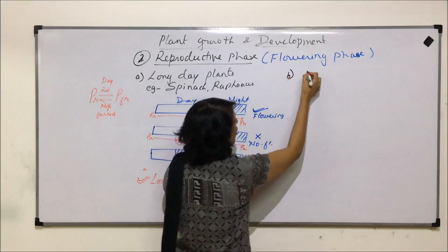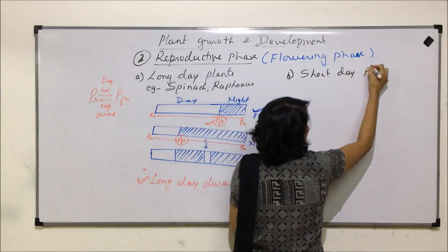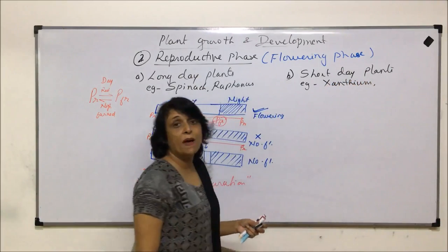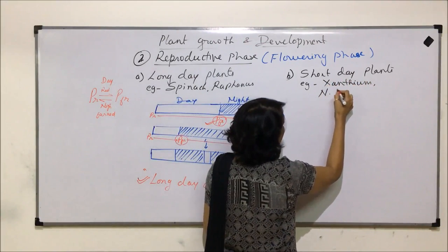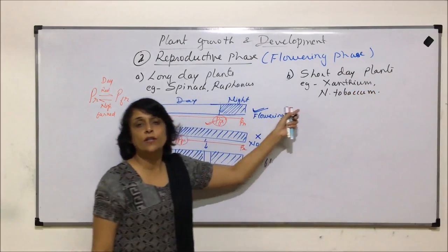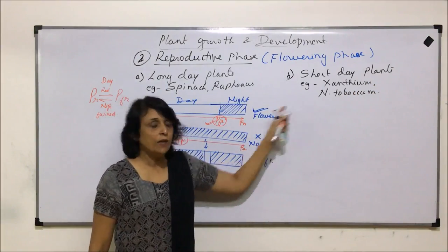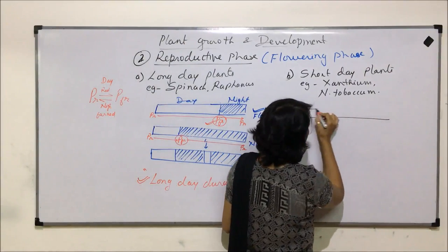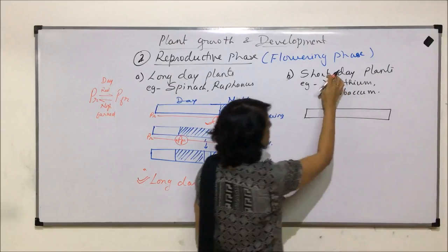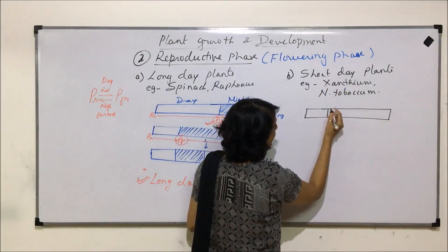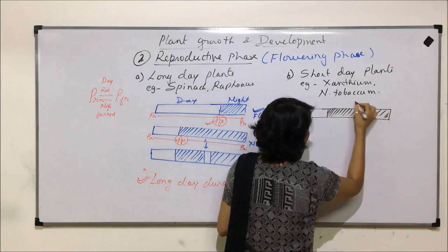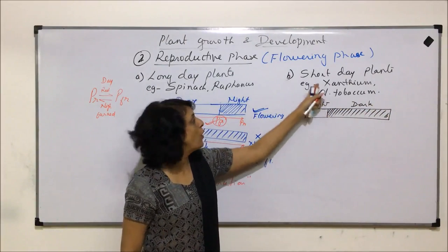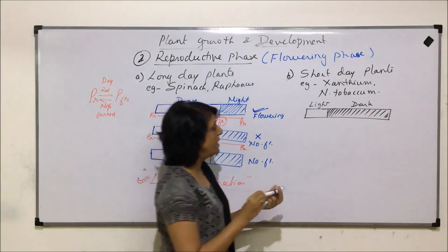The second category are short day plants. Examples include Xanthium and a tobacco variety, Nicotiana tabacum. These are important examples of short day plants. Now let us see the same kinds of situations for short day plants. Suppose a short day plant is exposed to what its name says — a short duration of day and a long uninterrupted dark phase. It becomes very clear that what the plant requires is a short duration of day and a long uninterrupted night.